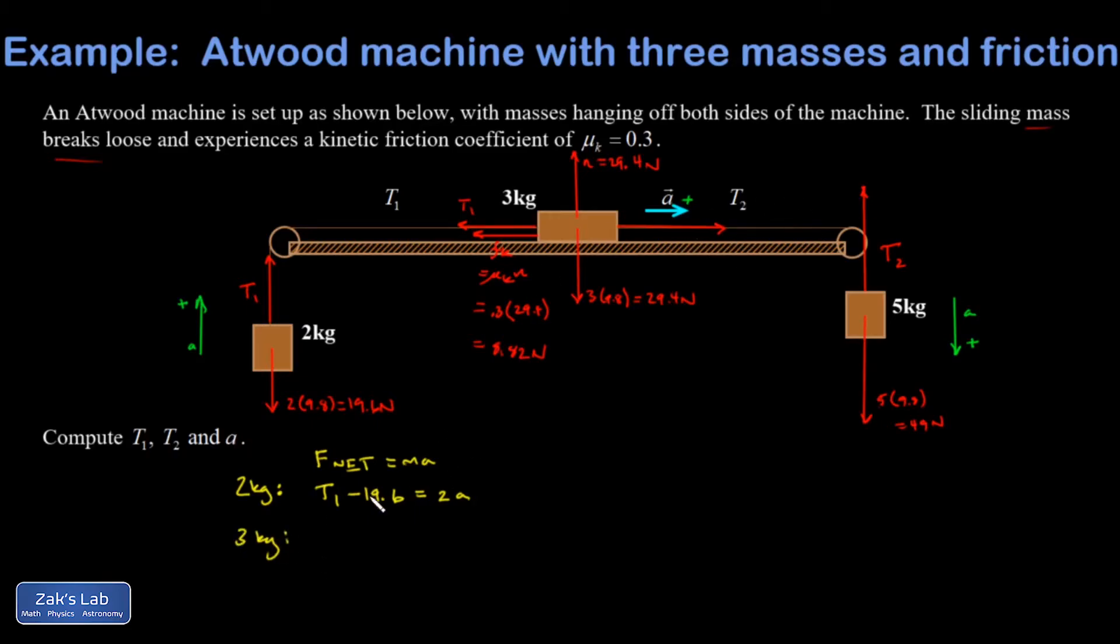Rightward is positive. T2 pulls to the right. T1 pulls to the left. That is an unknown that we're trying to solve for in this problem. Again we're trying to find both tensions and the acceleration. And there's another force to the left. That's the kinetic friction. And I already found out what the magnitude of that is so plug it in. So there's F net and it's equal to the size of that mass multiplied by the acceleration. What about the five kilogram?